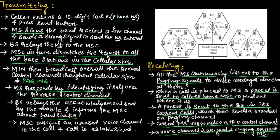In this, let us consider two cells. Let us say the first cell is transmitting and the second cell is receiving. Let us assume that this mobile is transmitting and this mobile is receiving. First, let us understand the transmitting operation in mobile communication system.